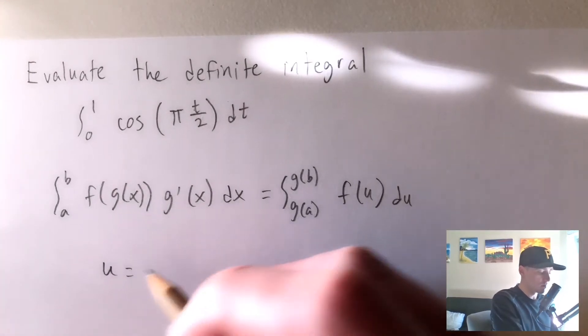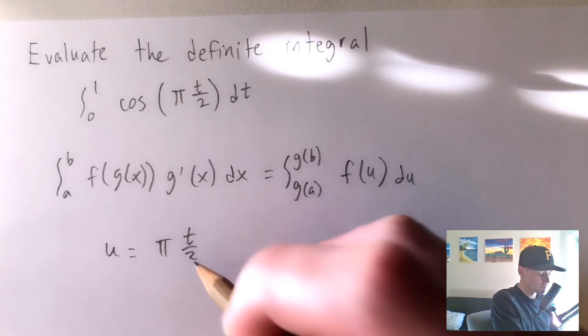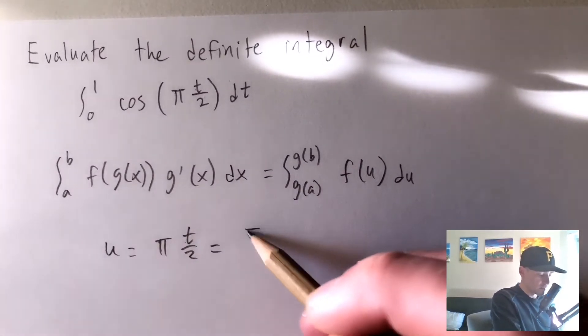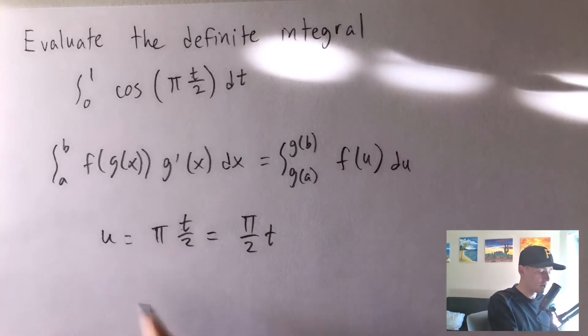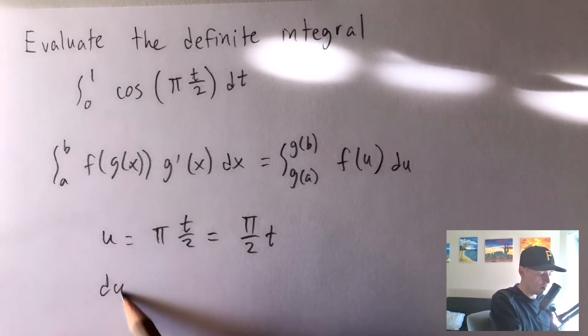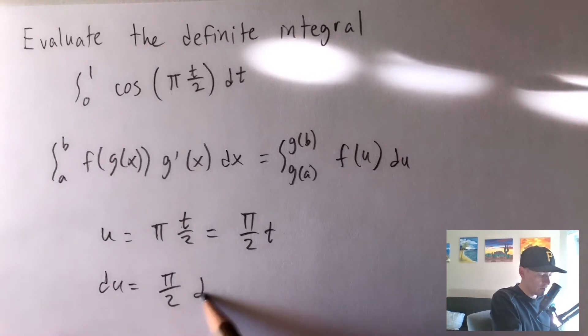If we say u equals pi times t over 2, basically we could think of this as pi over 2 times t. If you ever just have a constant times your variable, the derivative of this, so our du, is just going to be pi over 2 and then dt.